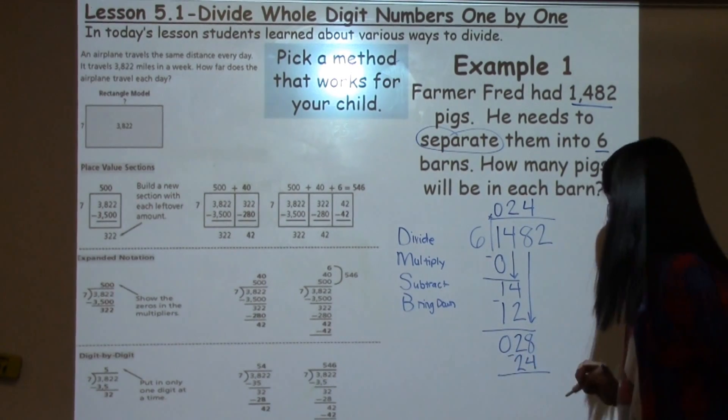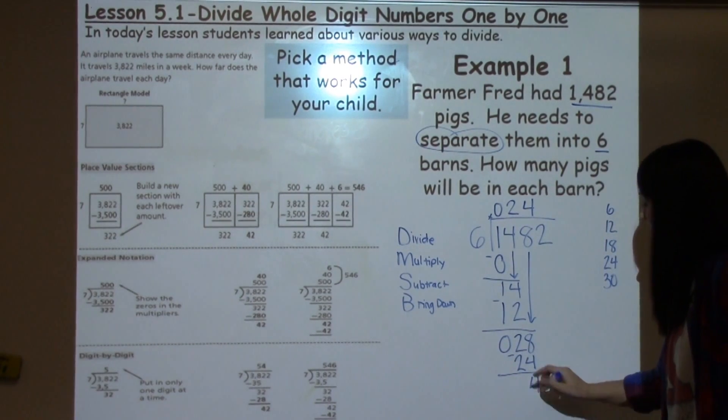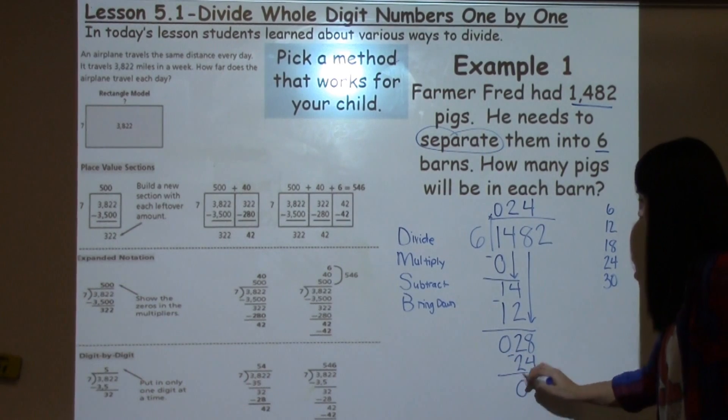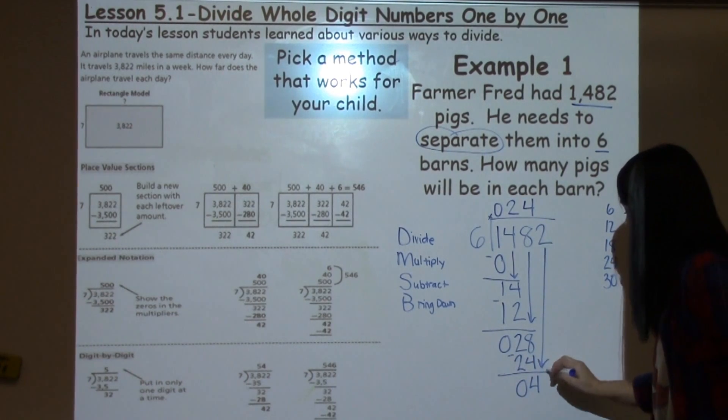Now I'm back to my subtraction step. 8 minus 4 is 4. 2 minus 2 is 0. And I bring down my 2.